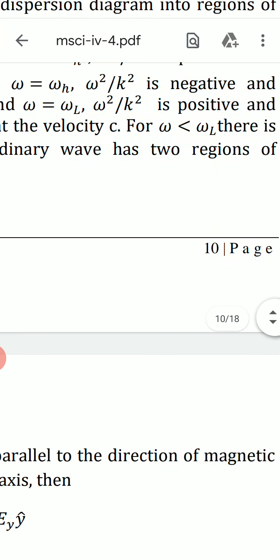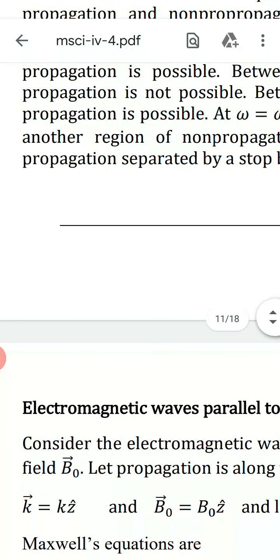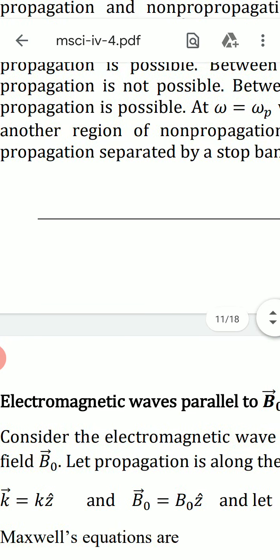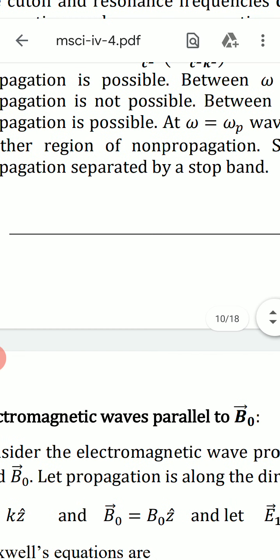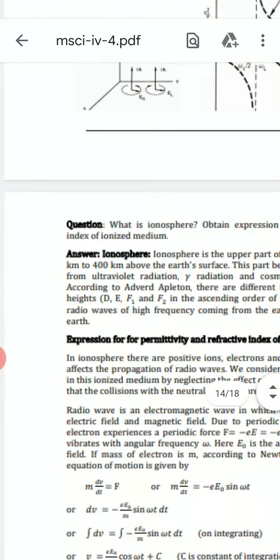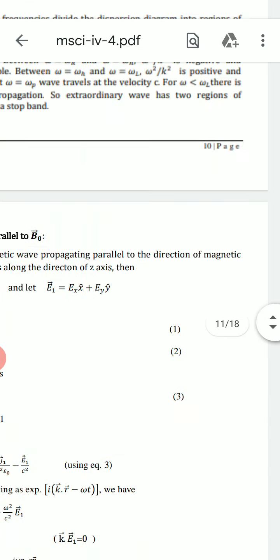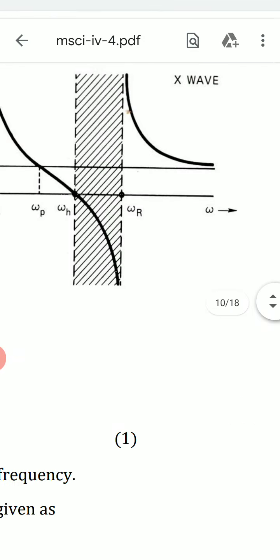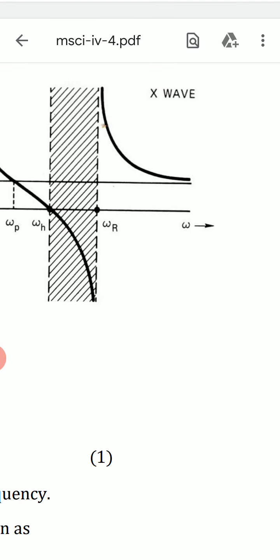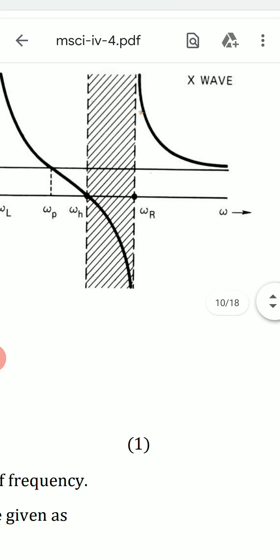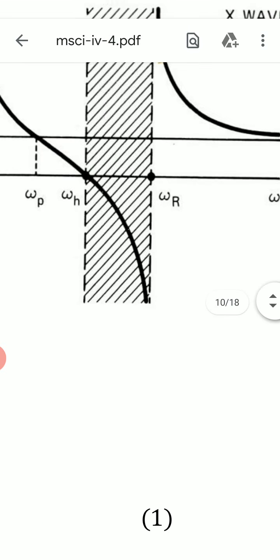For ω less than ωL, there is another region of non-propagation. So the extraordinary wave has two regions of propagation separated by a stop band — the cross-shaded region of non-propagation when frequency ω is between ωH and ωR.